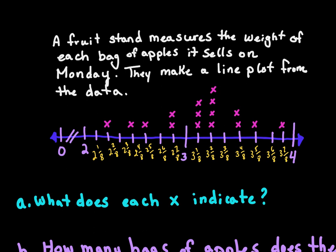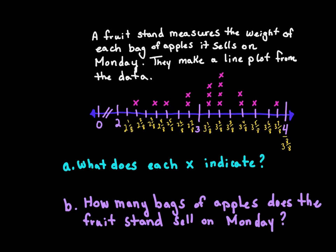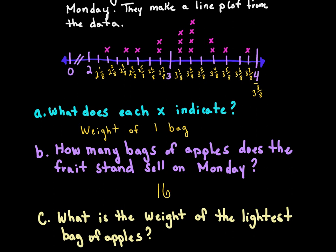When we reach four, that would be three and eight-eighths, which really just means four — because eight-eighths is a whole. Each X indicates the weight of one bag. Counting all the Xs, the fruit stand sells 16 bags of apples on Monday.